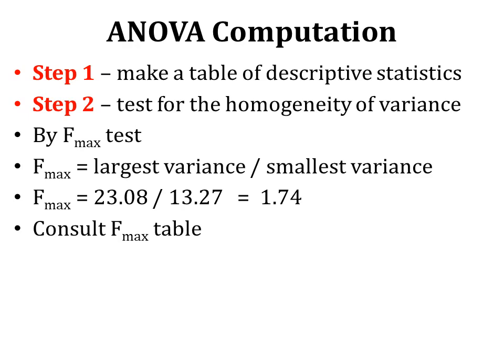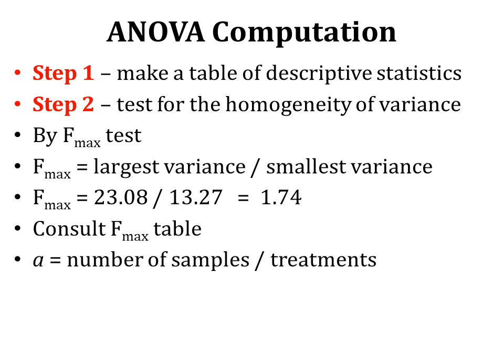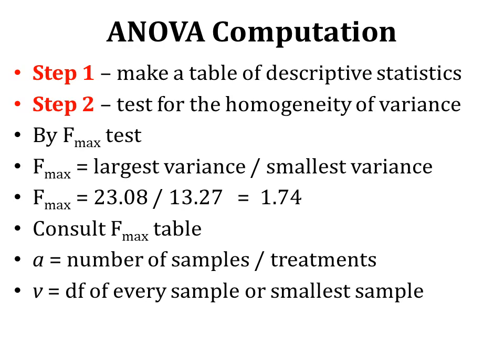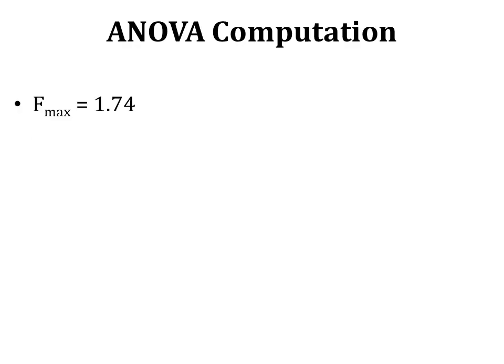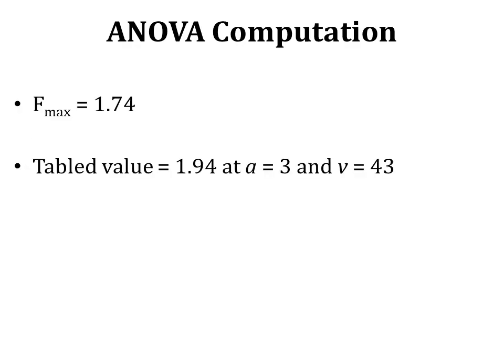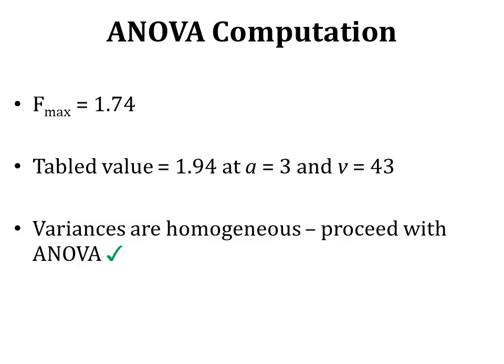To determine whether the ratio 1.74 is significant, we need the value A — the number of samples, which is 3 — and the degree of freedom of the smallest sample. Since sample sizes differ, we use the df of the smallest sample (n=44), so df = 43. The table value at A=3 and df=43 is 1.94. Since 1.74 is less than 1.94, variances are homogeneous and we can proceed with ANOVA.